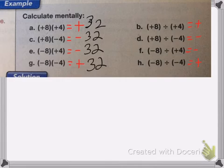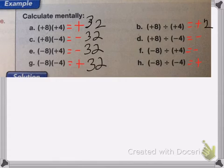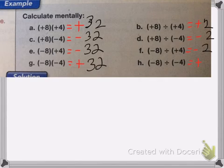A positive 8 divided by a positive 4 equals a positive 2. A positive 8 divided by a negative 4 is a negative 2. Negative 8 divided by a positive 4 is negative 2. And a negative 8 divided by a negative 4 is positive 2.